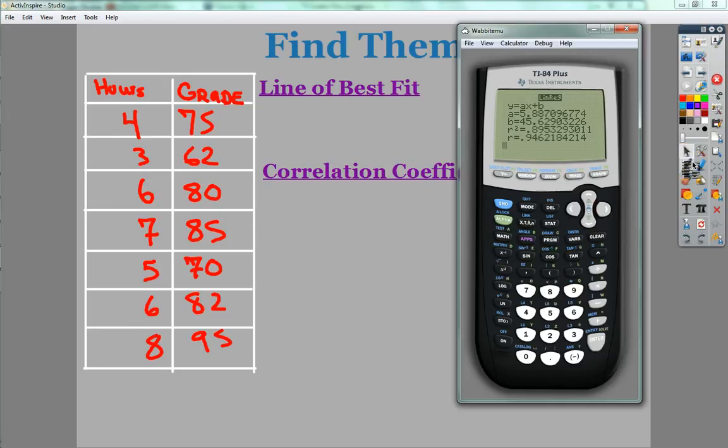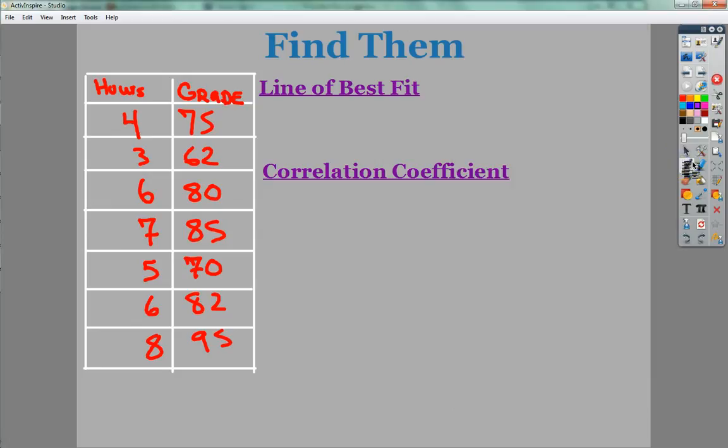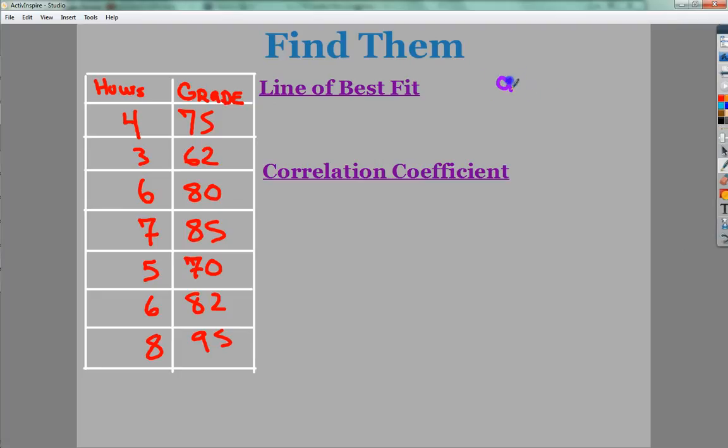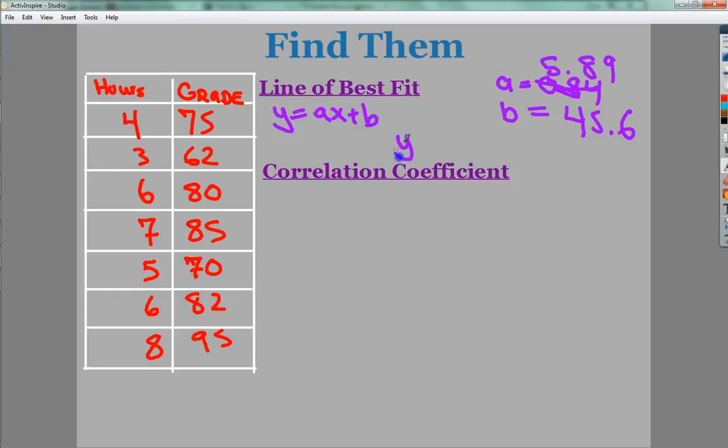So I'm going to write all those down in the form that I want, and it will click my calculator out, which is pretty annoying, but anyway. My values were 5.89 and 45.6. So my line of best fit, they gave me this form here, would be Y equals 5.89X plus 45.6.